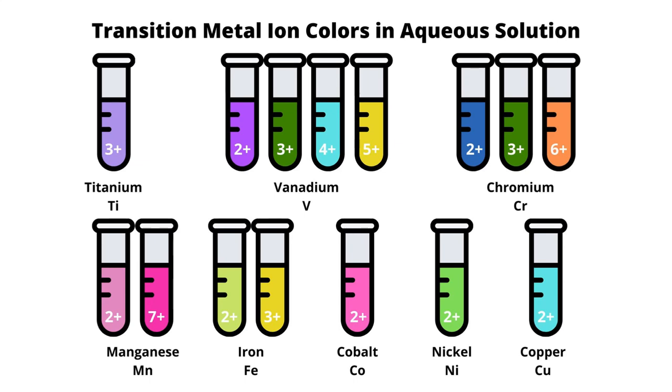When you place a transition element or transition metal in water, you get different colored compounds. But what's even cooler is if you take something like vanadium, which has four different oxidation numbers, and you place it at each of the different oxidation numbers in water, you get four different colors. So why is this and what is happening?